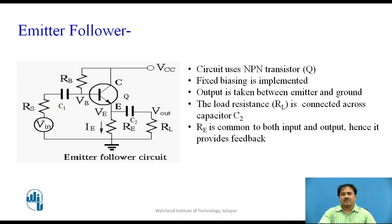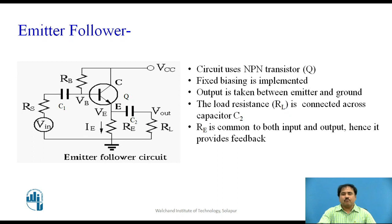This is a diagram for emitter-followers. In this case, we use one NPN transistor. In the circuit, we use a fixed-biased condition to bias the transistor, and the load is connected to the circuit through the capacitance C2. If you see this element RE — that is, resistance in the emitter — it is common for both input and the output. The voltage from base to emitter is driving the current IB into the base, which is the input current. The voltage VB is taken to be the input voltage, and the output voltage is across resistance RE. So RE is a common element between input and the output, and it is going to offer us the benefit of feedback.